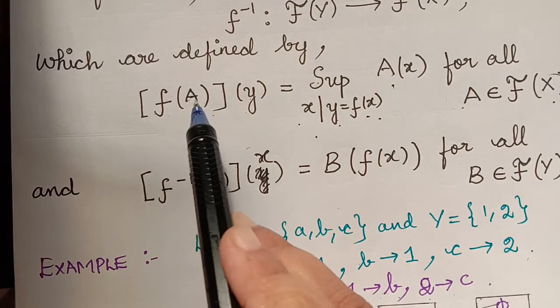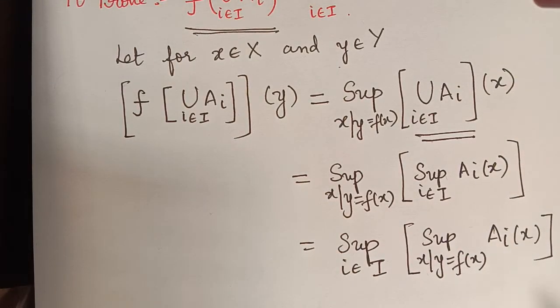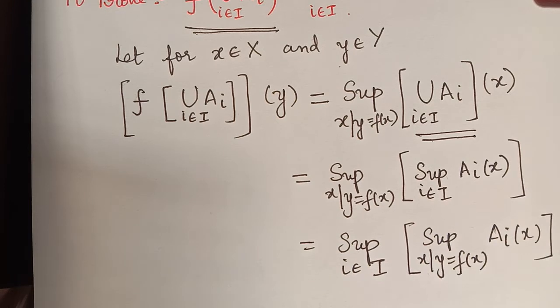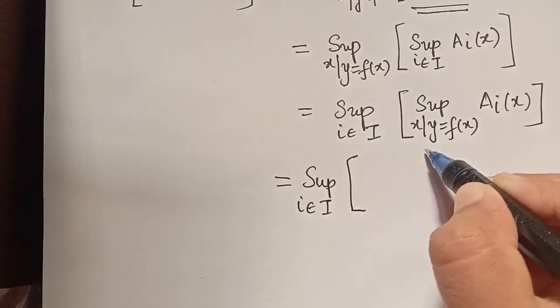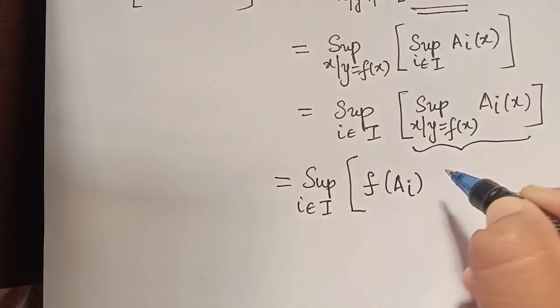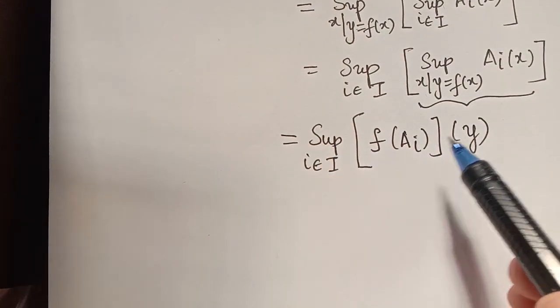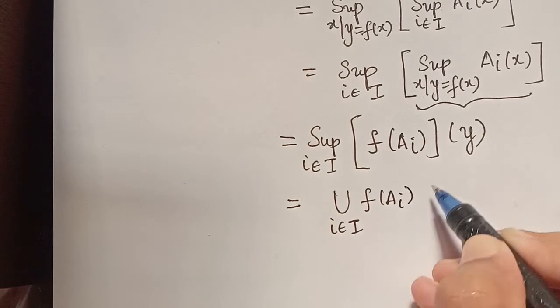Again by using the definition of the extension principle, f of Ai of y equals supremum of Ai of x such that y equals f of x. So here we have supremum of Ai of x, which can be replaced as f of Ai of y. This will be equal to supremum of i an element of capital I of f of Ai of y. By using the fuzzy union, supremum of f of Ai of y equals union over i an element of capital I of f of Ai of y.